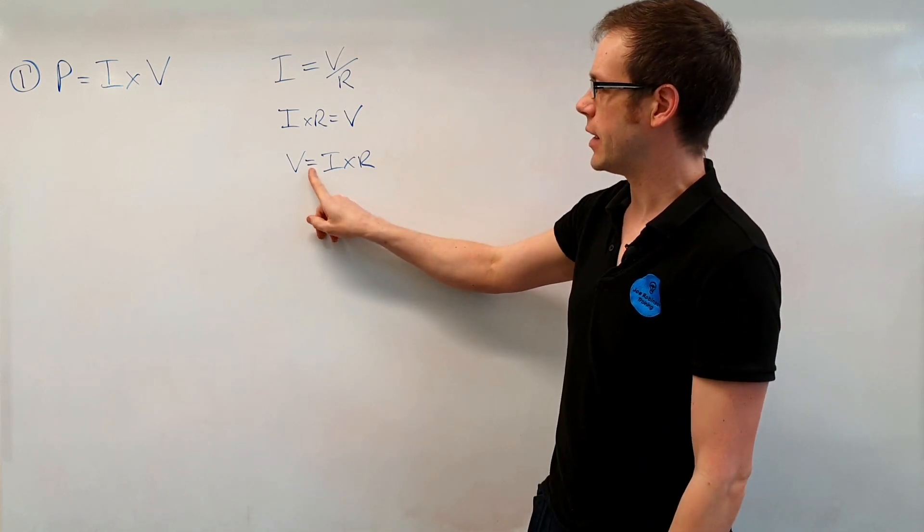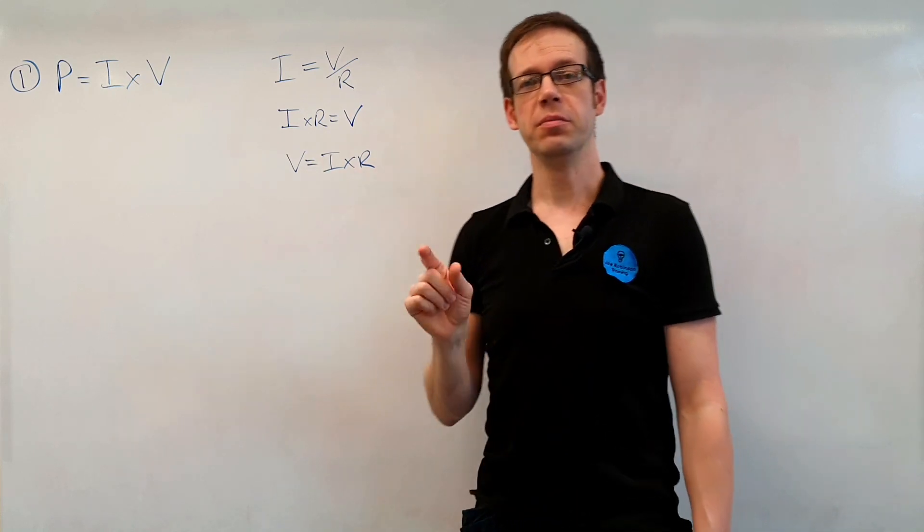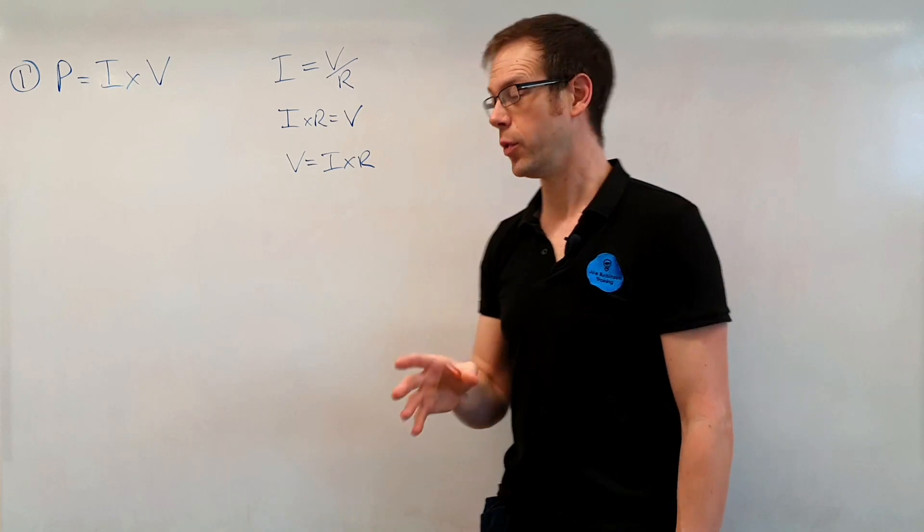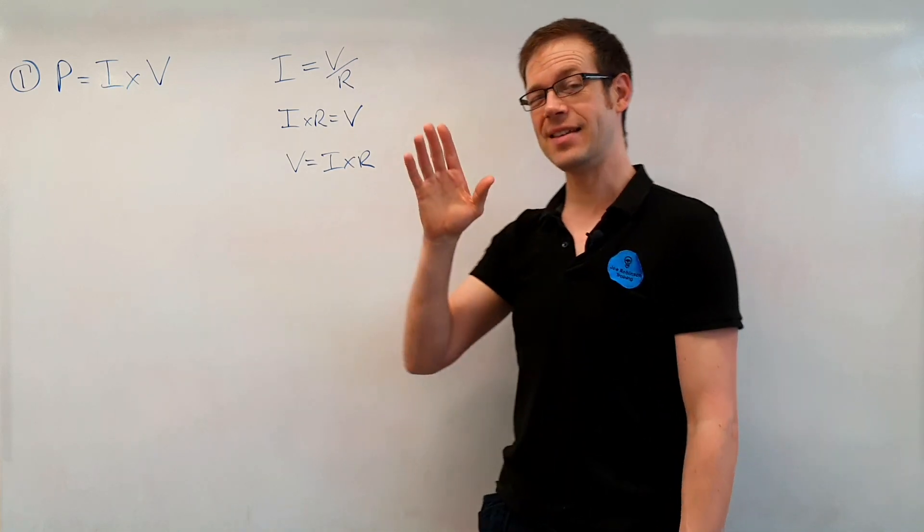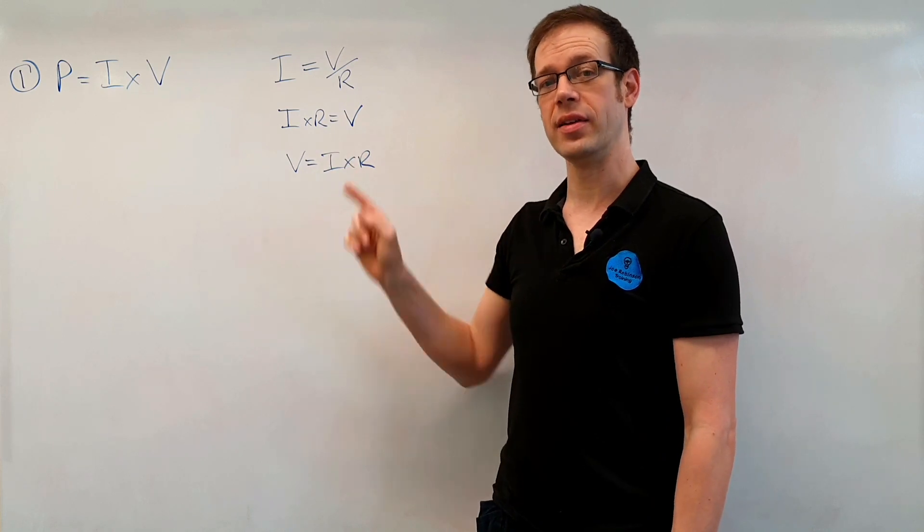So if we go back to basics and look at that symbol there and think what does that mean? Well that symbol means is the same as. Is the same as. So what this is saying is that V is exactly the same as I times R. They are the same thing.